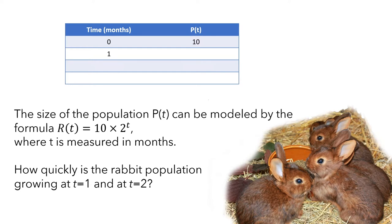Then, one month later, we don't know exactly how many rabbits there are, but this is when the babies are born. A month after that, we still don't know the number of rabbits, but this is when the rabbits are allowed to rest. Then, at three months — two months after giving birth — we still don't know the total number of rabbits, but this is when the rabbits mate again. Now, after the initial 10 rabbits, we don't know exactly how many rabbits there are, but the formula gives us a prediction.